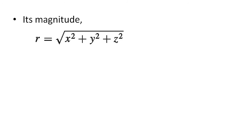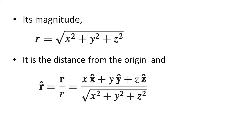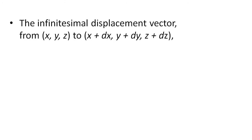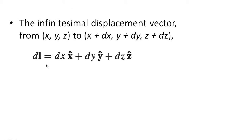The magnitude of R is given by R equals the square root of X squared plus Y squared plus Z squared — it is the distance from the origin. The unit vector R cap equals vector R divided by the magnitude of R, which equals (X x-cap plus Y y-cap plus Z z-cap) divided by the square root of X squared plus Y squared plus Z squared. The infinitesimal displacement vector from coordinate (X, Y, Z) to (X+dX, Y+dY, Z+dZ) is represented by dL, equal to dX x-cap plus dY y-cap plus dZ z-cap.